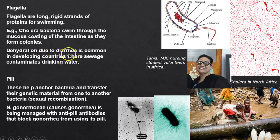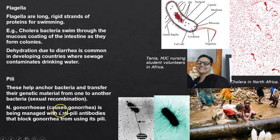Some bacteria reproduce through conjugation — they essentially have sex. Gonorrhea is a good example of how bacteria become resistant to antibiotics: they mutate and transmit their genetic material to one another. That's a remarkable and concerning process.